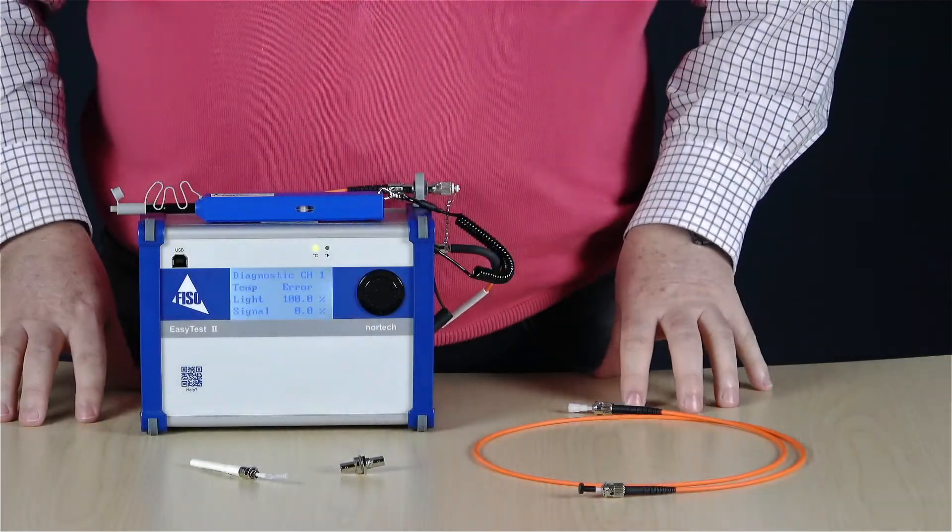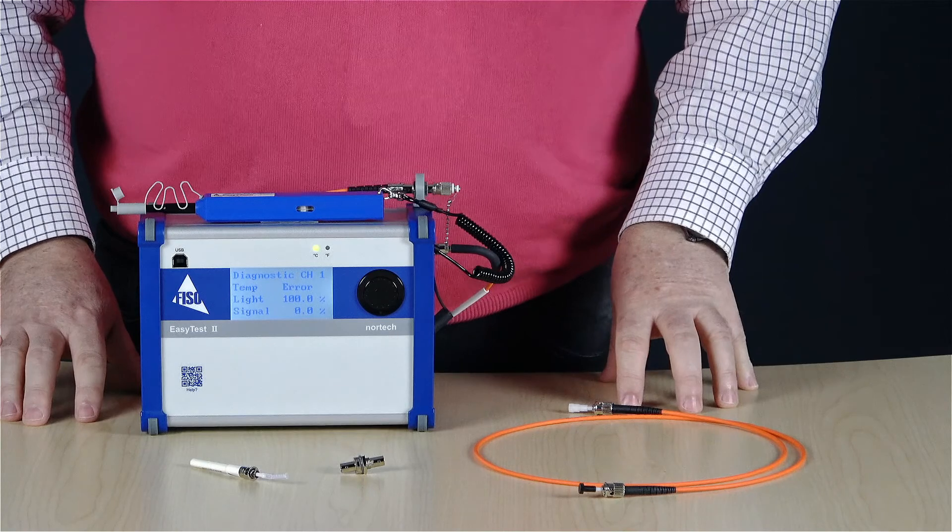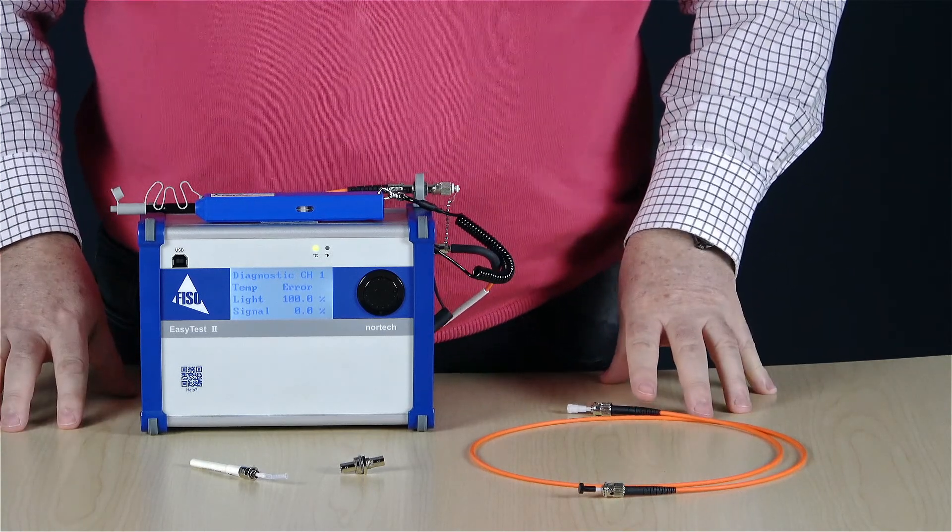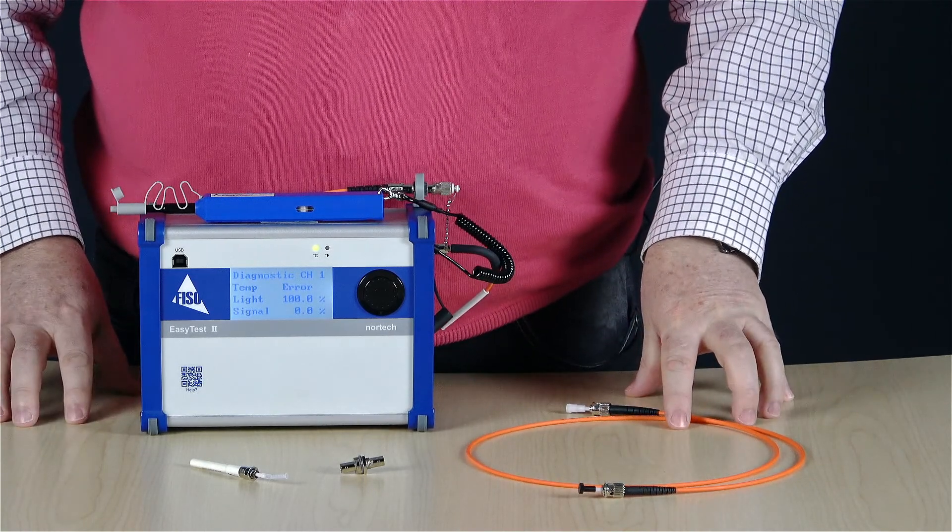You can also validate your installation by testing your CFOs already installed within the conduits of your transformer. Again, with the cleaning process first.